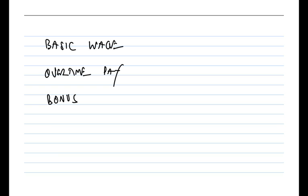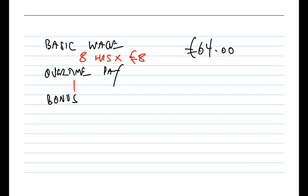Starting with the basic wage - that's relatively straightforward. The basic working hours are eight hours per day. Phoebe has actually worked at least the eight basic hours, and the basic hourly wage is £8 per hour. So eight hours at £8 per hour gives a basic wage of £64. Has Phoebe then worked any overtime? Phoebe did work on Monday a total of nine and a half hours - that is one and a half hours above the eight hours basic working hours. So that's one and a half hours of overtime work to give the total of nine and a half hours.